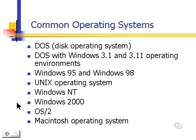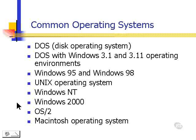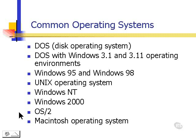Windows 2000 is an even more stable and more secure operating system that was just released in 2000. OS/2 is an operating system released by IBM and is used by some businesses, but doesn't have the following of some of the Microsoft systems and Macintosh operating systems.